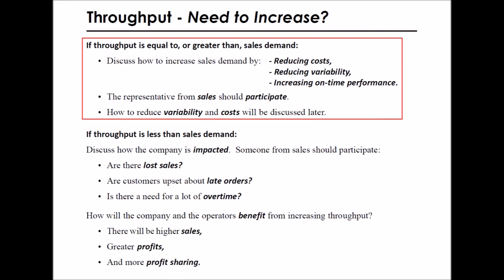If throughput is equal to or greater than sales demand, discuss how to increase sales demand by reducing cost, reducing variability, and increasing on-time performance. Someone from sales should participate in the discussion. How to reduce variability and cost will be discussed in later sessions.